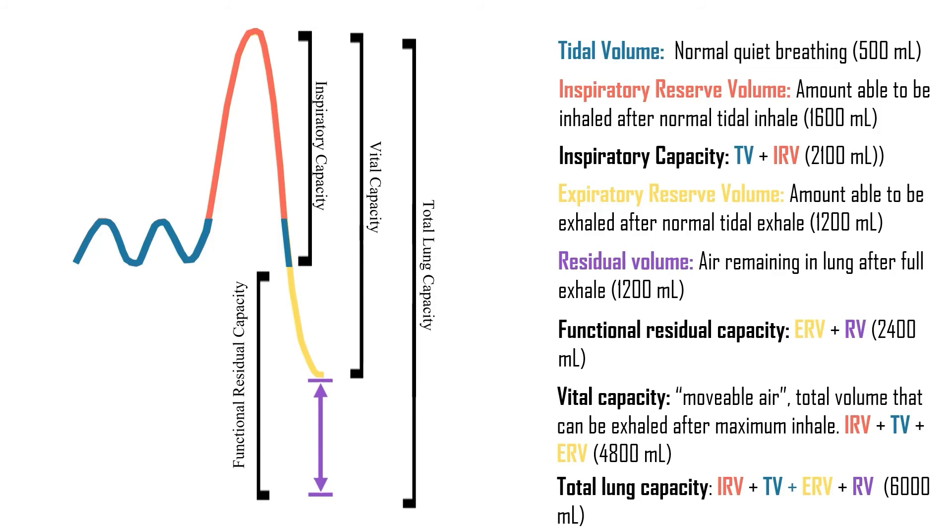So when you're looking at this, you'll see some patterns. Anything that ends in volume is a set number, like tidal volume, 500 milliliters. But anything that ends in capacity is a value that you get by adding two or more of the volumes.